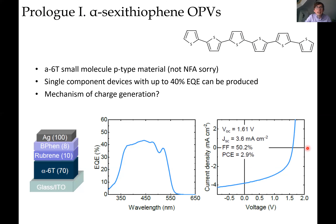Rather than give a standard introduction, I'll say what triggered my interest and where this work came from. It came from two projects we had last year with the group of Koen Vandewal. You probably know Koen Vandewal works a lot on organic photovoltaics and small molecule cells. The first system we looked at was the classical alpha-6T, the oligothiophene.